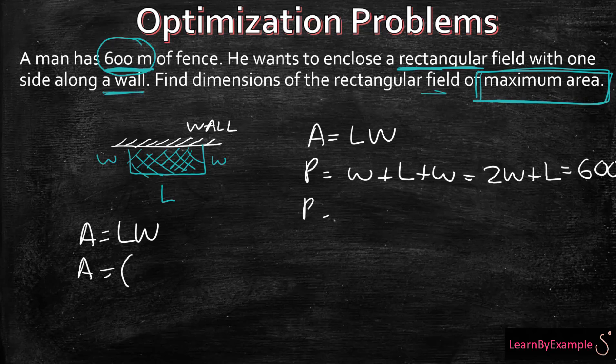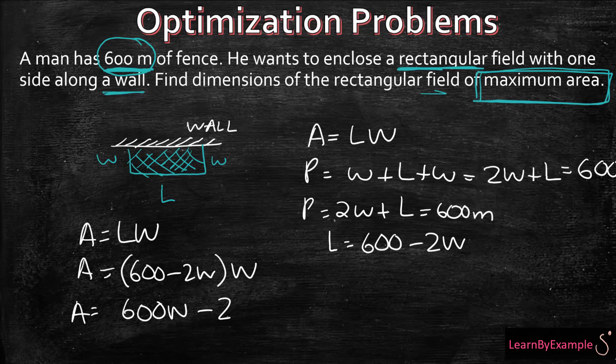When we look at our perimeter, 2W plus L is equal to 600 meters. And if we want things in terms of L, it's going to be 600 minus 2W. So that goes in there, times W. So let's expand that. It'll be 600W minus 2W squared. Excellent.